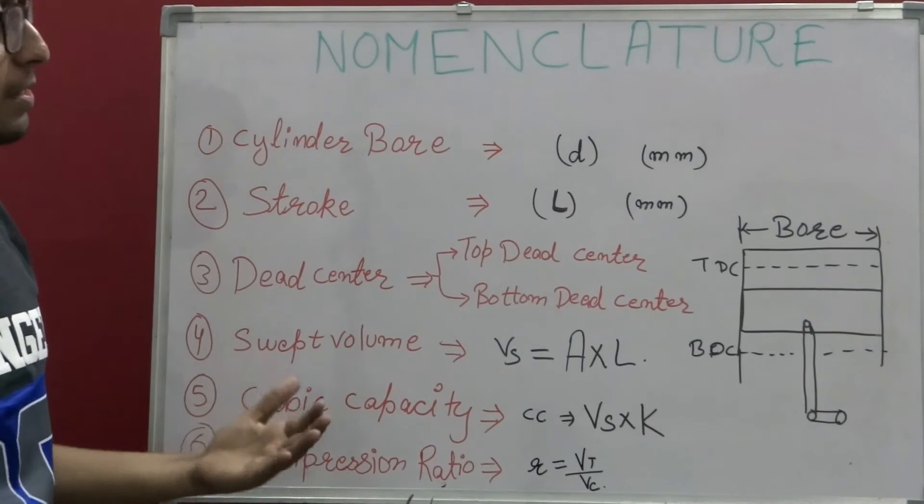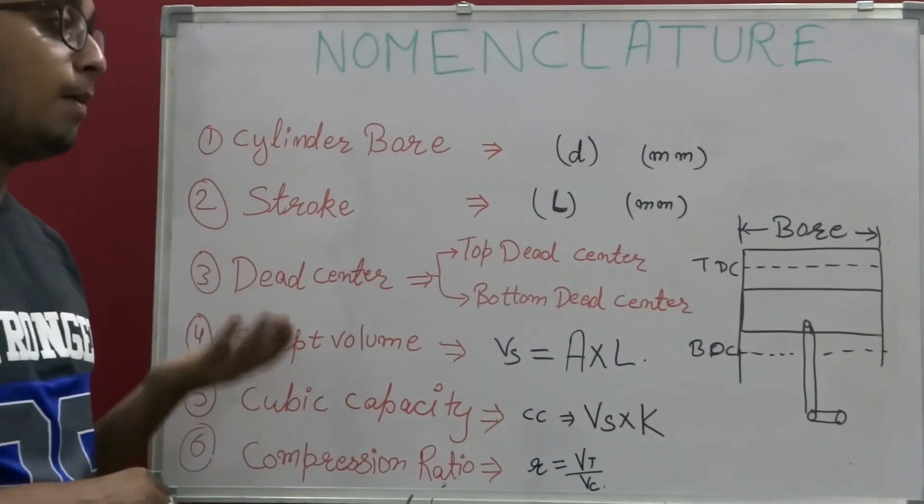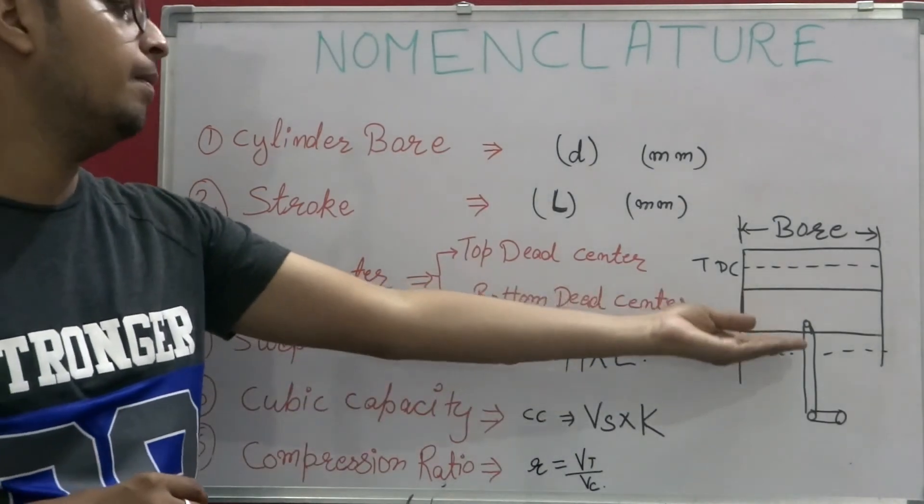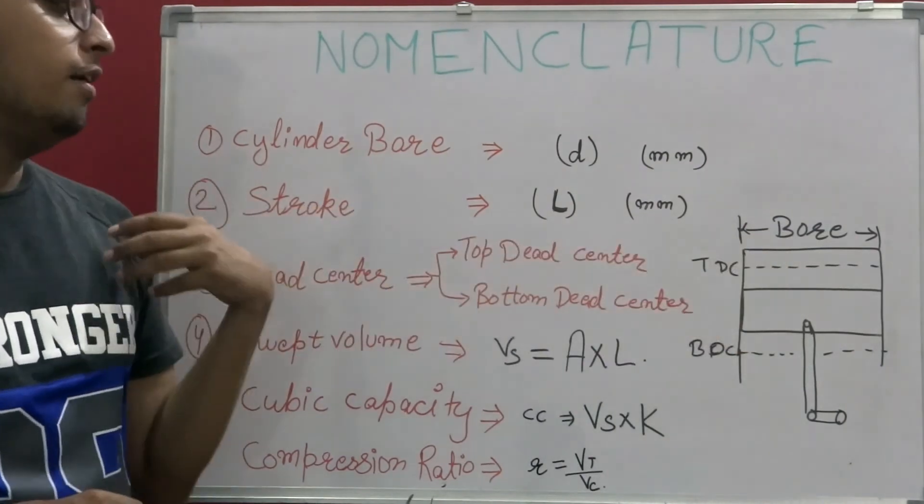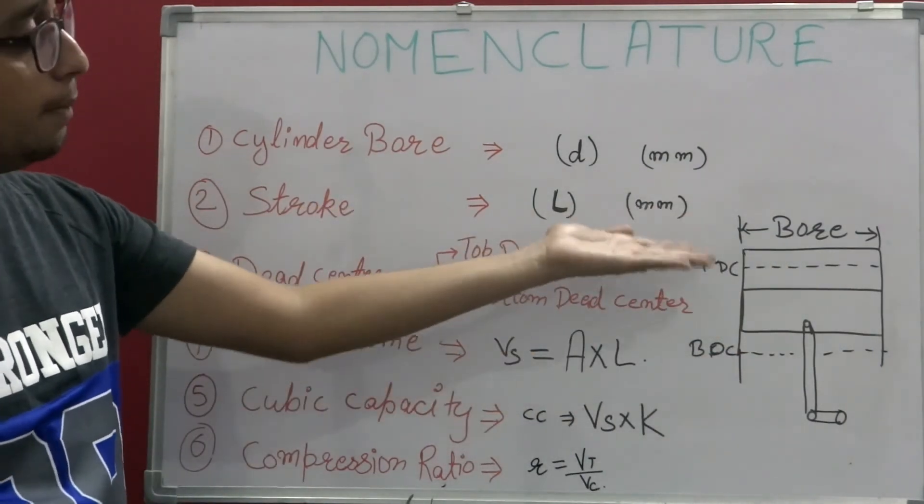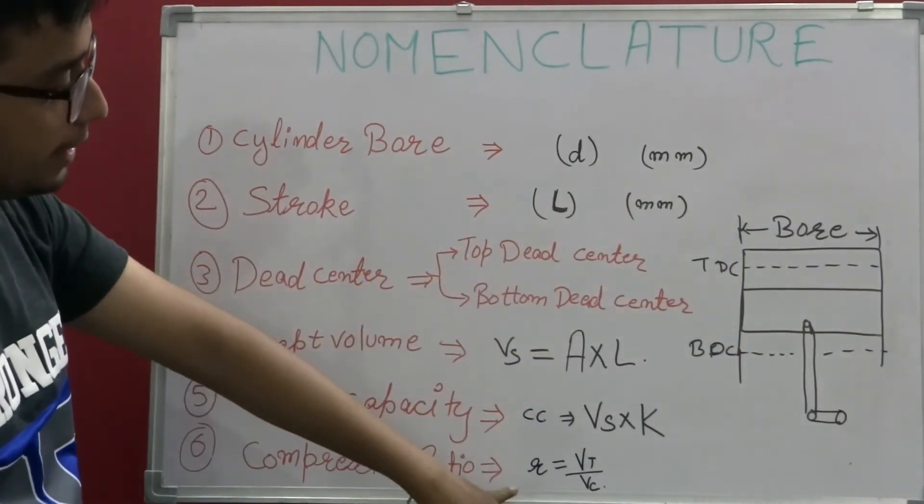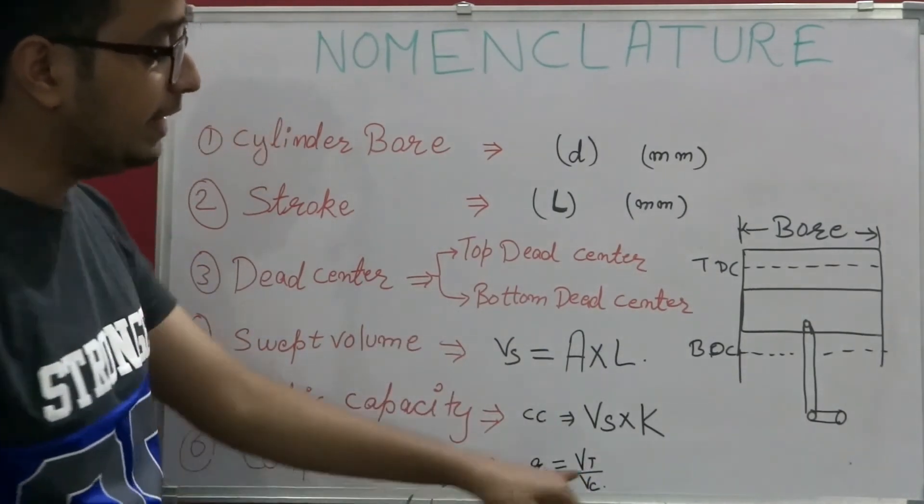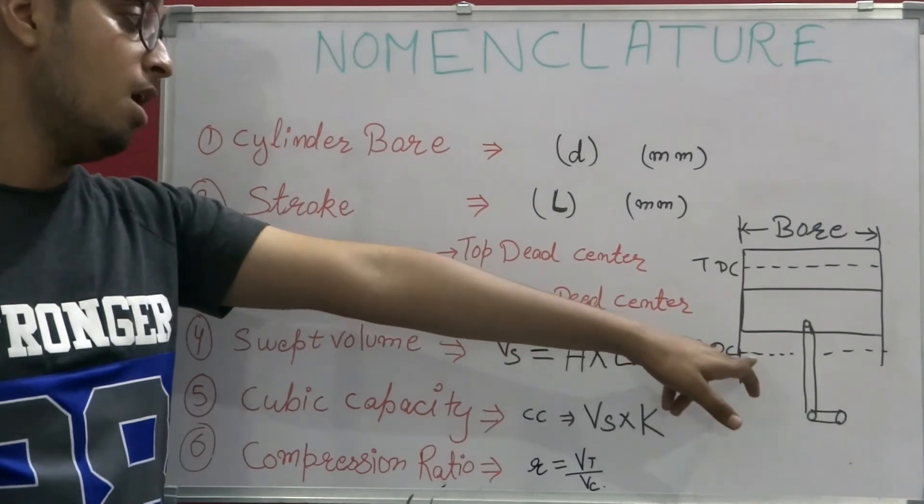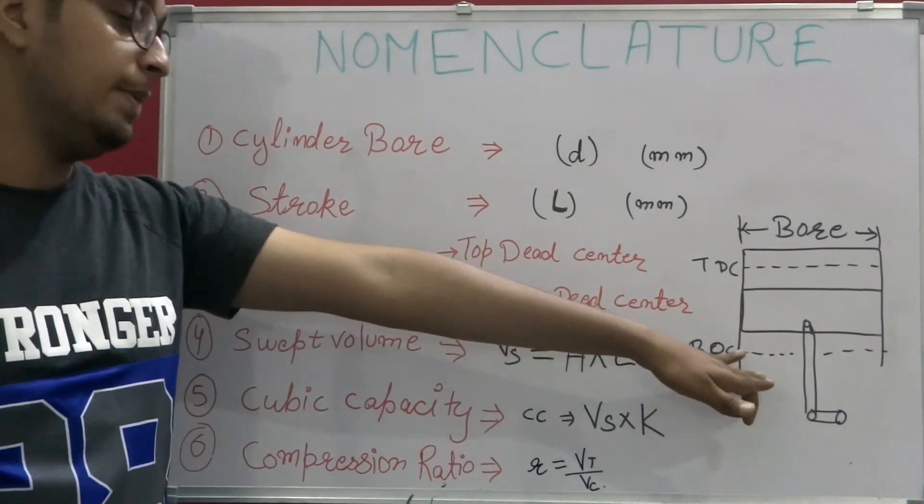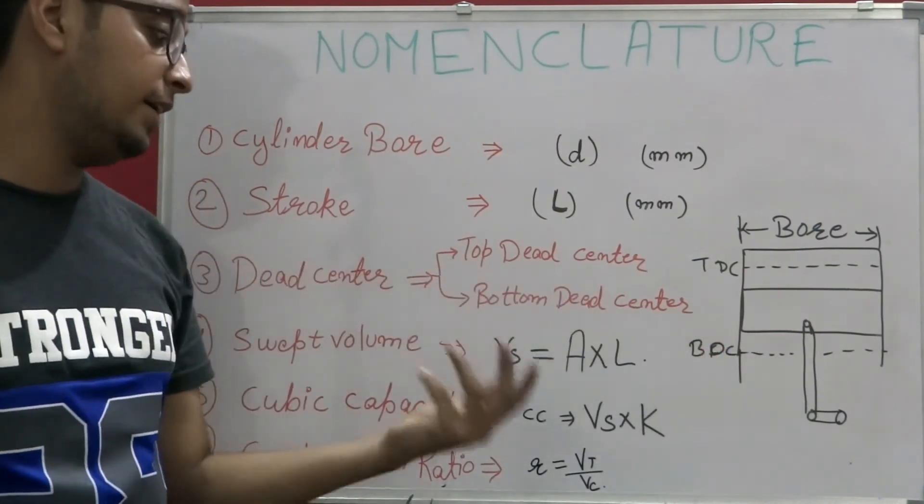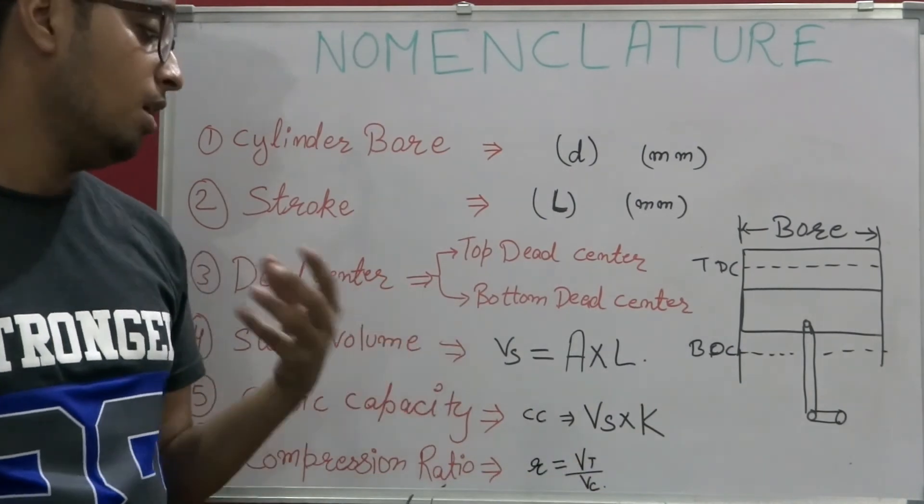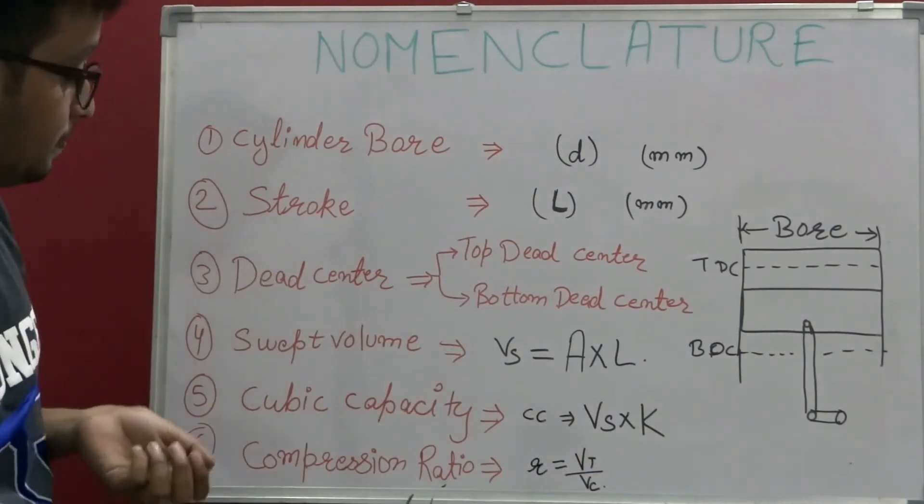Compression ratio helps us in finding the amount of fuel that is being compressed by the piston when it is travelled from BDC to TDC. It is basically denoted by small r and its formula is VT upon VC, where VT is the maximum volume when the piston is at bottom dead center and VC is the clearance volume.